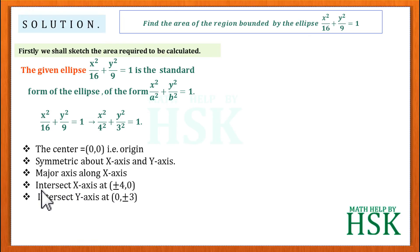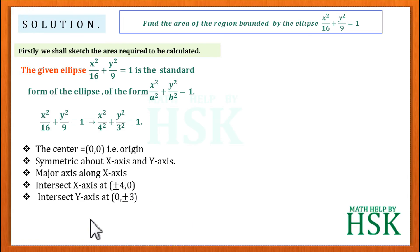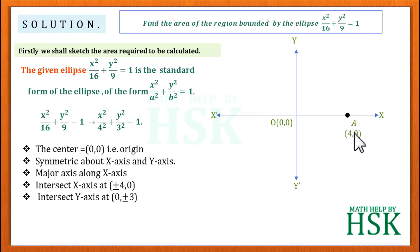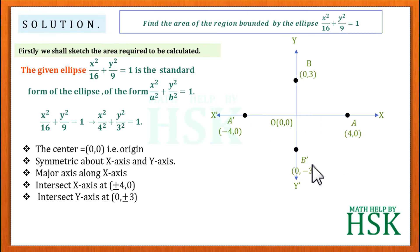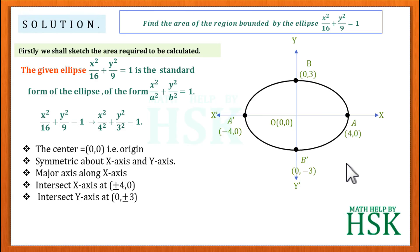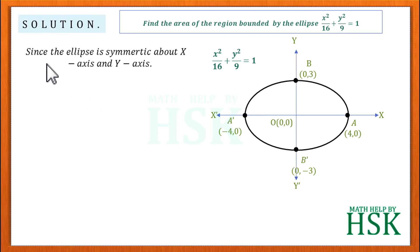The points (±4, 0) are the ends of the major axis, written as (±a, 0), and (0, ±3) are the ends of the minor axis. Taking the coordinate axes, I mark point A as (4, 0), A' as (−4, 0), and the ends of the minor axis as (0, 3) and (0, −3). I can now draw the ellipse — this is the required sketch.